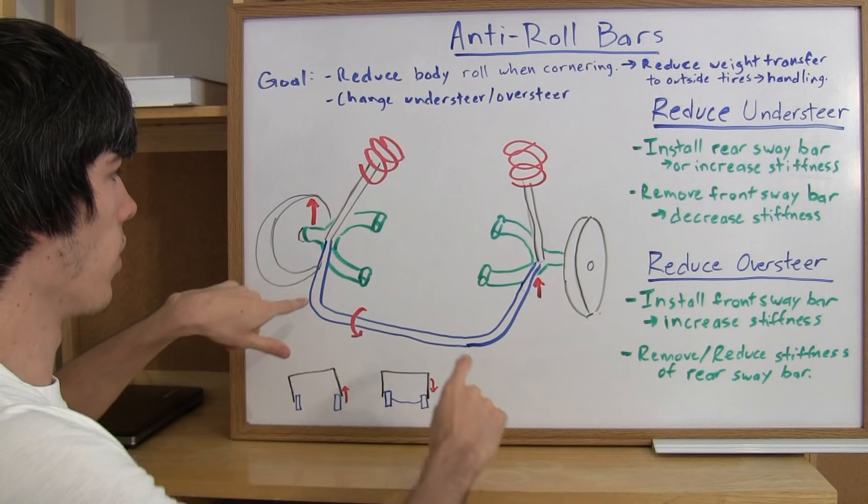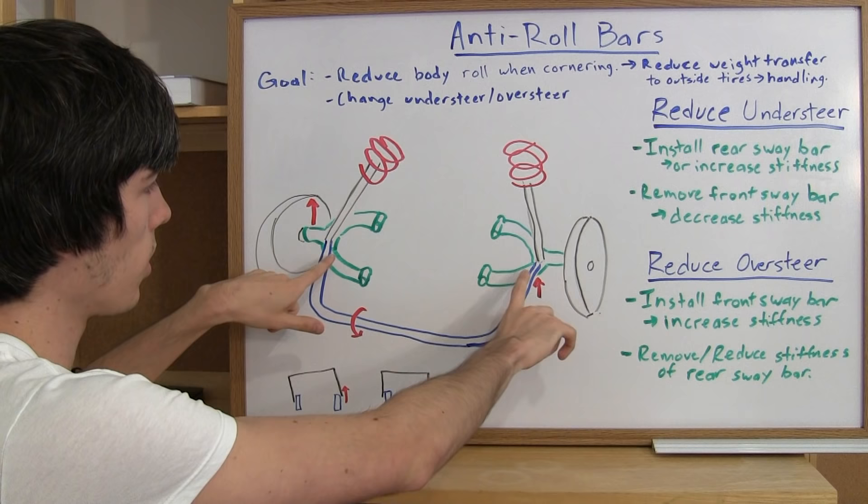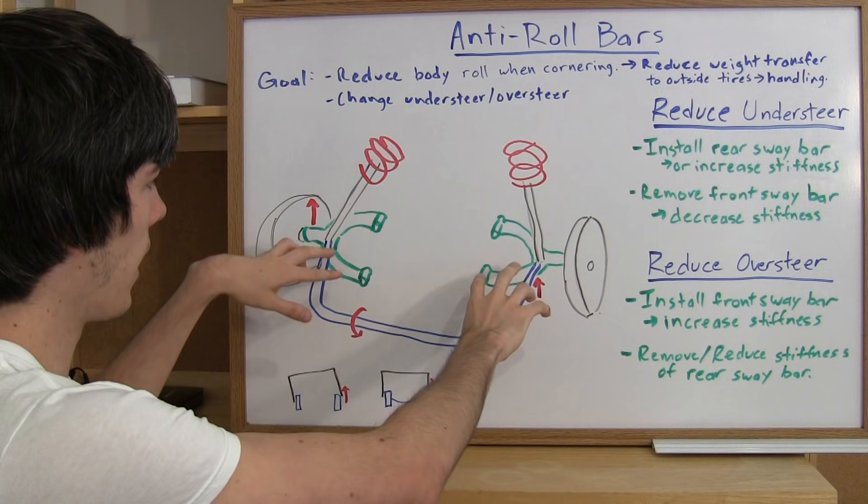So how does it work? Well, the anti-roll bar connects your suspension components. So you've got your control arms which are connecting to your tire and also connect to your frame. And so you're going to connect both of these control arms together, basically connecting these two independent suspension components.